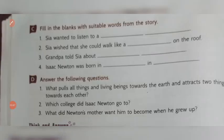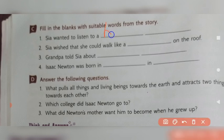Now come to question number C: Fill in the blanks with suitable words from the story. A blank is given and you have to fill it with suitable words. First one: Tia wanted to listen to a — what did she want? She wanted to listen to a bedtime story. Here you will write 'bedtime story'.